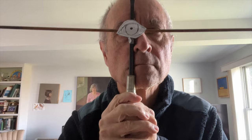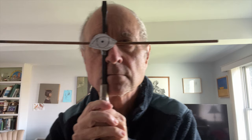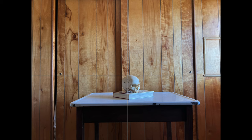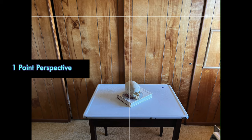I set up a simple tabletop still life and can show you where the horizon and the line of sight would appear from different viewing angles. How did I know where to place these two lines? Well, this sets up our next section: one-point perspective.